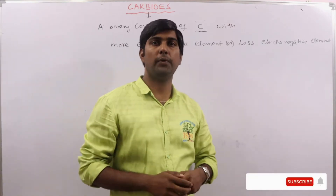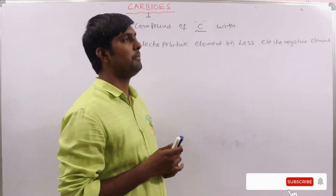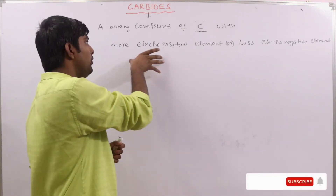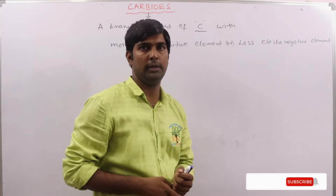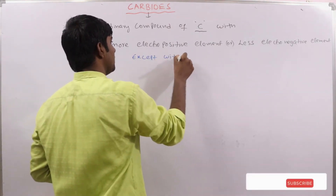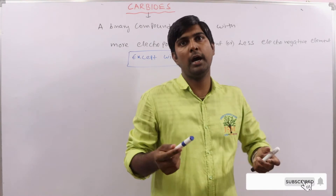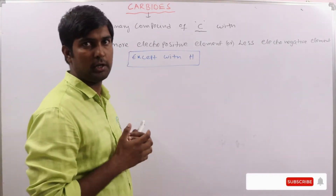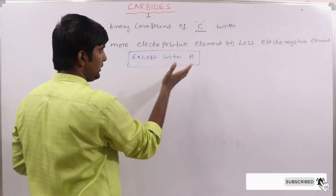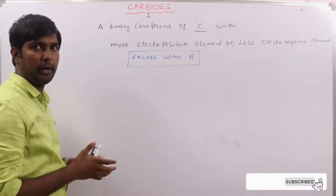A binary compound is a compound formed by two different types of elements. So carbon and another element — that element must be more electropositive or less electronegative. Remember, the exception is hydrogen. When carbon combines with hydrogen they form hydrocarbons, which we discuss in organic chemistry, so hydrogen is excluded.